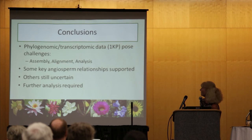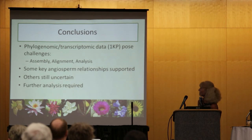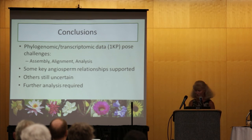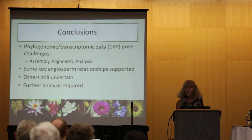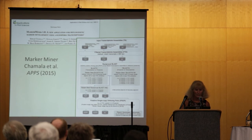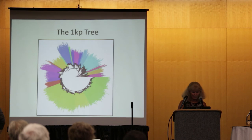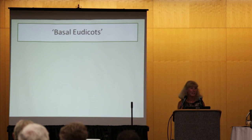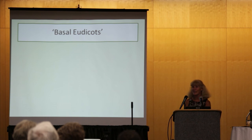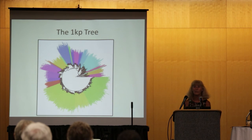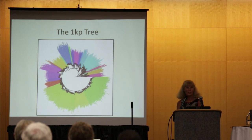To conclude, these phylotranscriptomic data from 1KP pose some challenges with assembly, alignment, and analysis. A lot of the key angiosperm relationships are supported, but others are still uncertain, and some further analysis is required to address incongruences and places that still lack resolution. Thanks to IAIN and the 1KP Consortium for all of the benefits that this project has provided, and thanks to all of you for your attention.